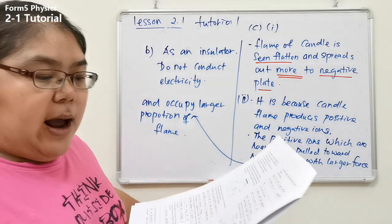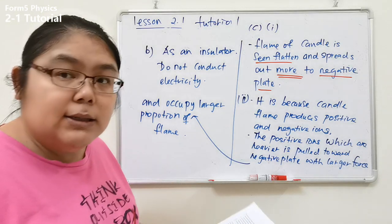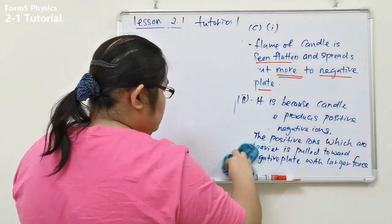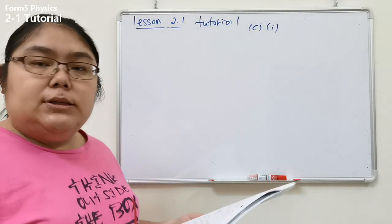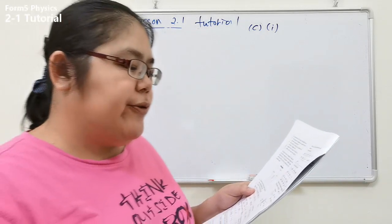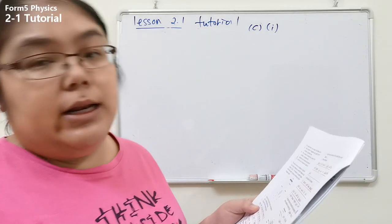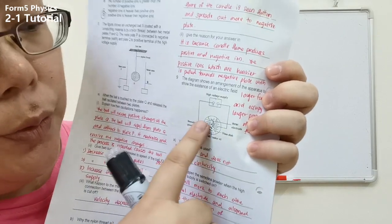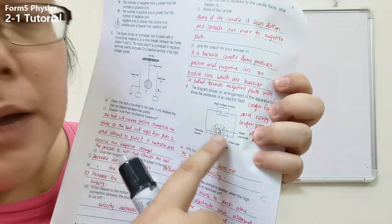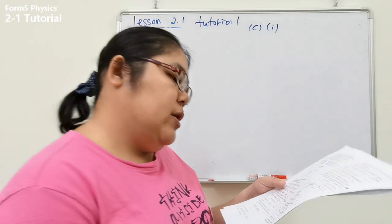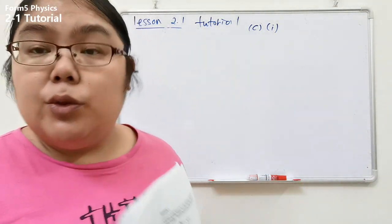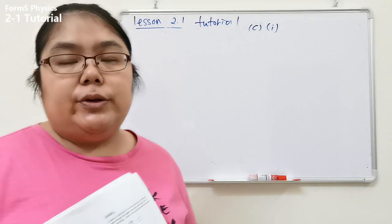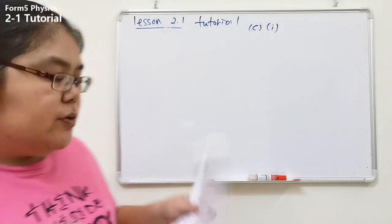Now we go to question nine, which is about semolina — how it aligns to show the electric field lines. The diagram shows the arrangement of apparatus to demonstrate the existence of an electric field. Part A: why is olive oil used? As I mentioned, oil is used because water conducts electricity, so we use oil instead.